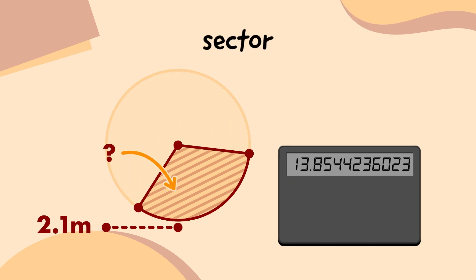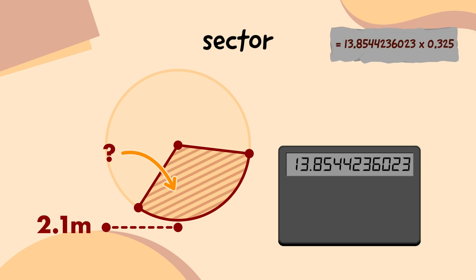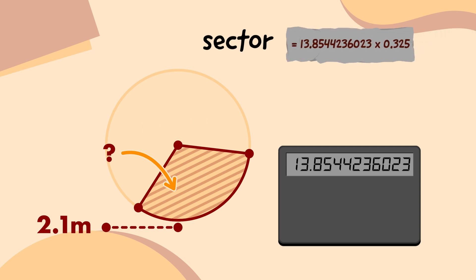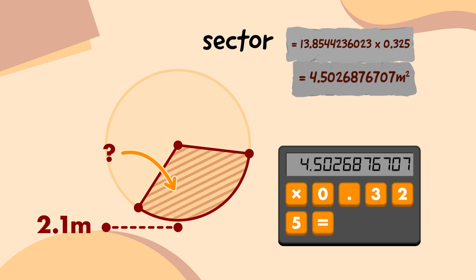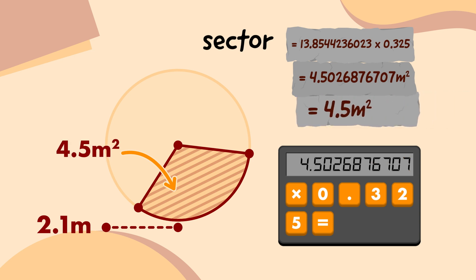Remember, this bit of the circle is 0.325 times as big as the whole circle. So I'm going to multiply that by the area. I'll press the multiply button, type 0.325, and press the equals button, which gives me 4.5026876707. That means the area of this sector of the second emblem circle is 4.5 square metres.